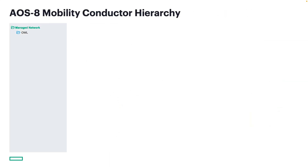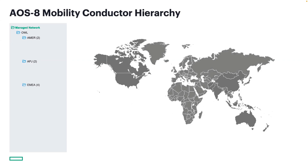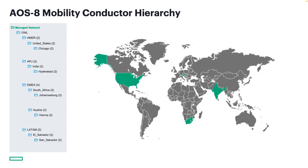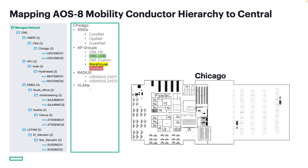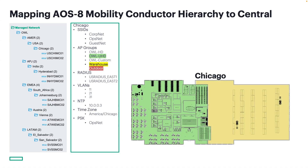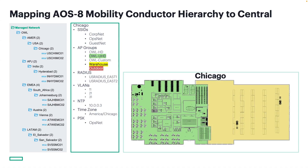This should be a familiar image for existing AOS 8 users. This is an example of a global company named Orange Widget Logistics. The top folder in their mobility conductor hierarchy is named OWL, with the next level down containing four regions, then countries, then sites named for their respective cities, and managed devices under each site. Using Chicago as an example, it has an office AP group broadcasting the global SSIDs, a warehouse AP group broadcasting the same excluding the guest SSID, and an outdoor AP group broadcasting only the guest SSID for truckers. The SSIDs and AP groups are inherited from the OWL group at the top level, RADIUS servers are inherited from the country level, and the rest were configured at the Chicago level.